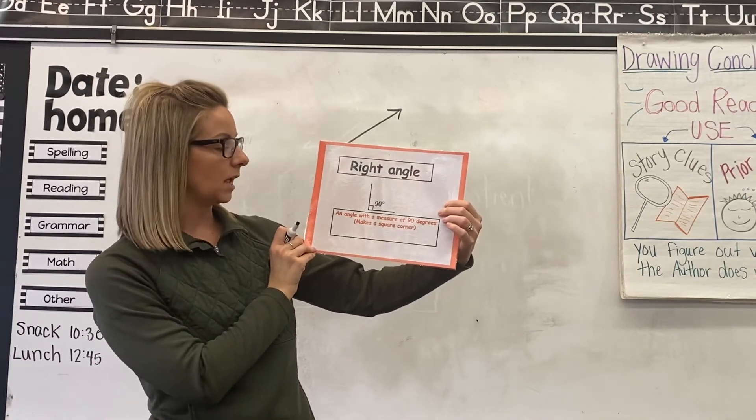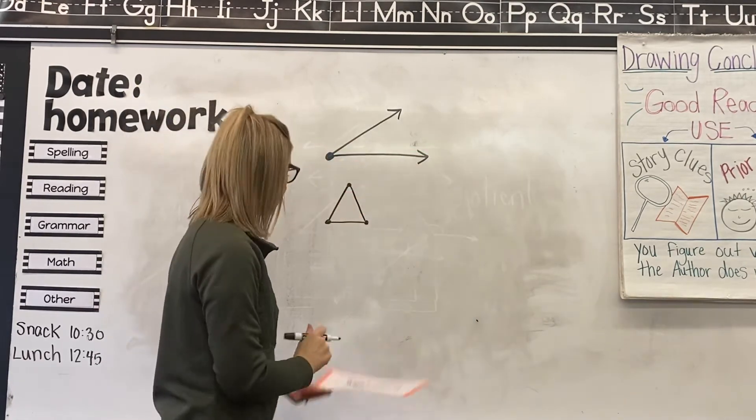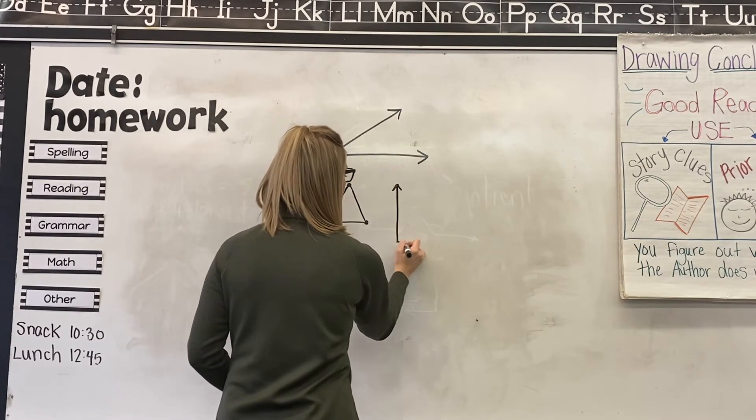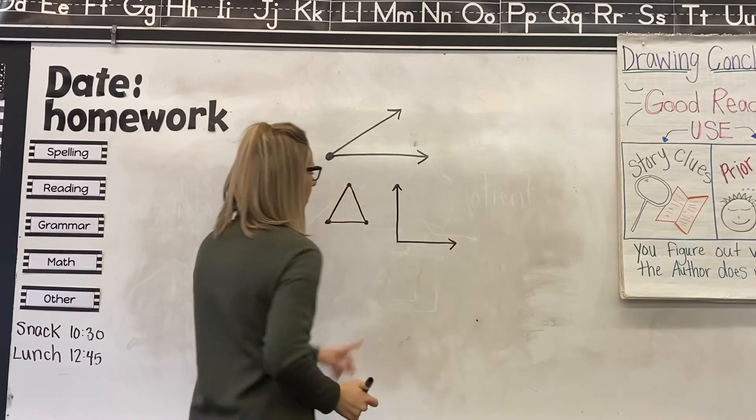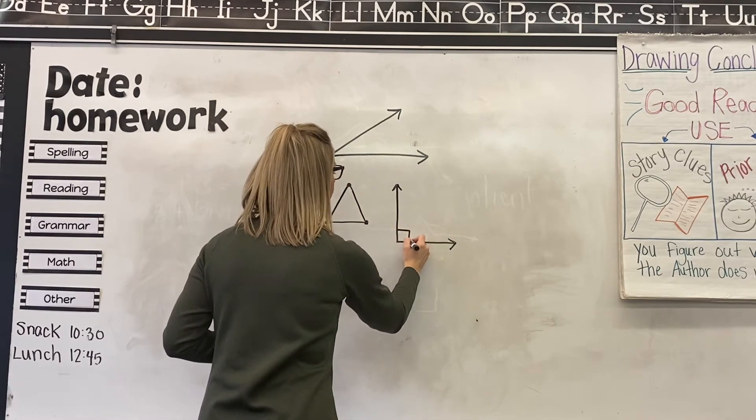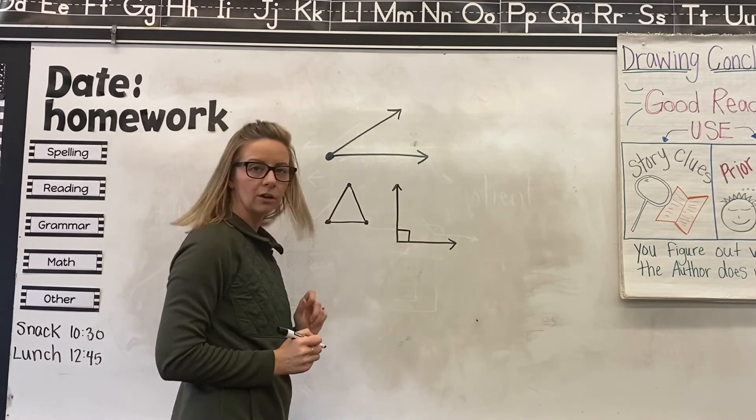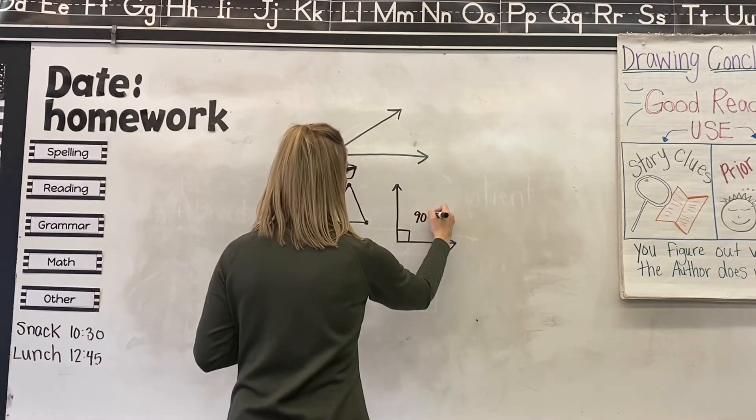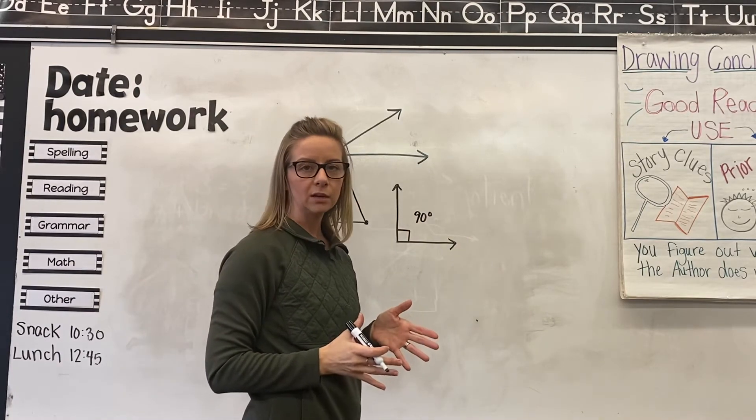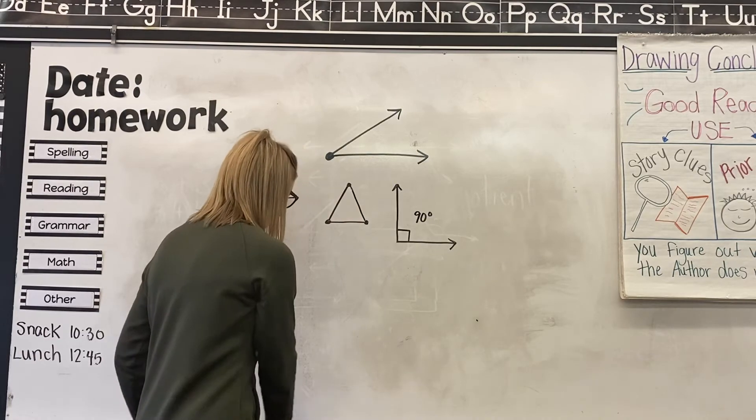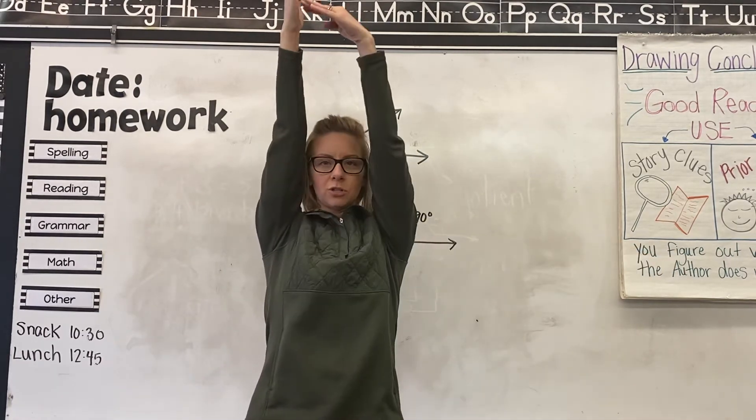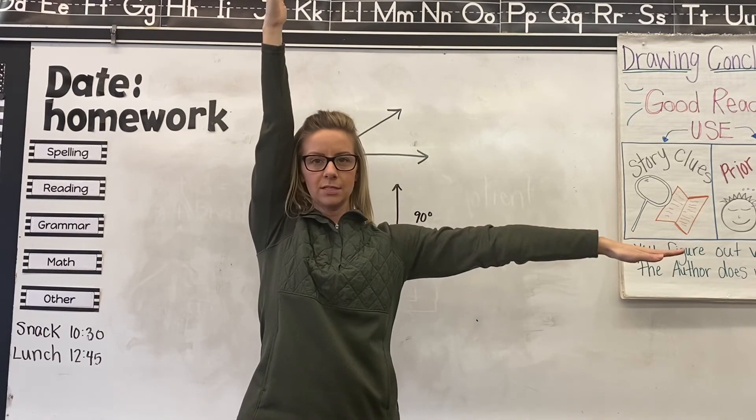A right angle is an angle with a measure of 90 degrees. So what that looks like goes straight up and down and then straight out to the side, and it makes a square corner. If you can fit a square corner right there, then it measures 90 degrees. And you would measure it with a protractor which I'll show you in our reteaching video. So our motion for right angle is going to be your arm straight up and your other arm out to the side. Right angle.